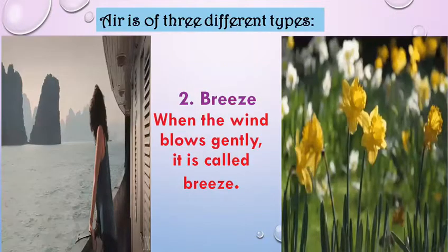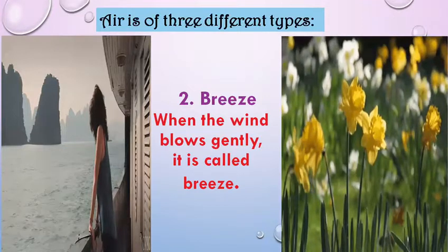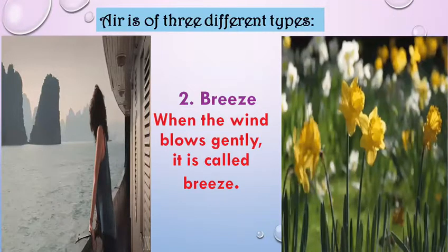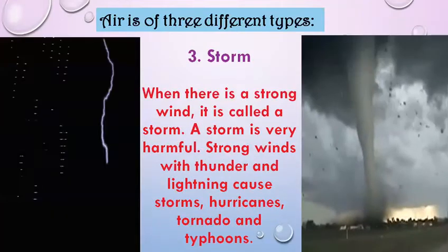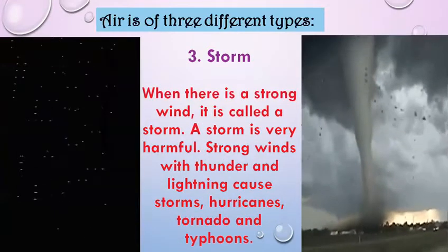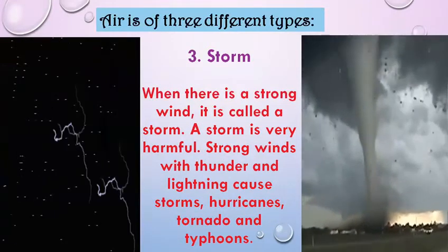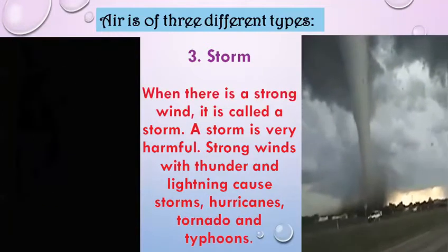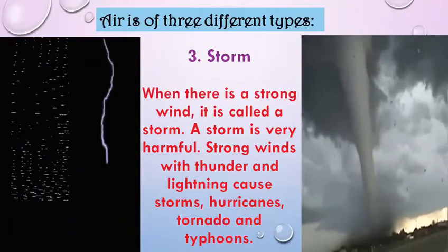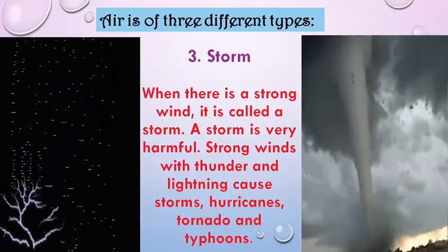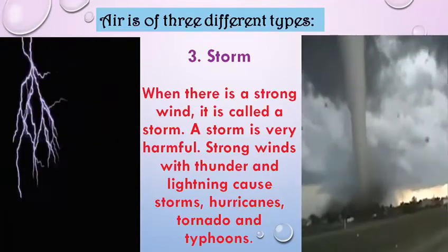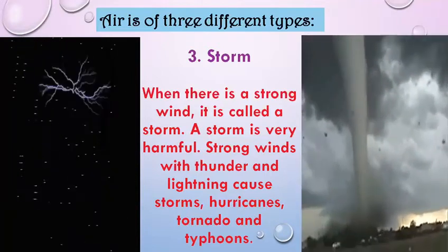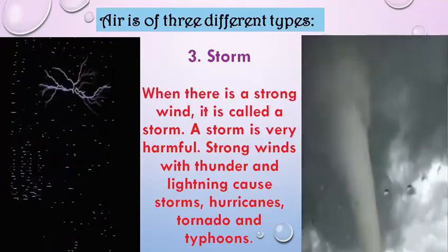Breeze is the second type of air. When the wind blows gently, we call it a breeze. Storm: when there is a strong wind, it is called a storm. A storm is very harmful. Strong winds with thunder and lightning cause storms, hurricanes, tornadoes and typhoons.